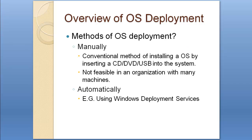So what are the methods of OS deployment? There are really two ways: manually and automatically. Manually is the conventional way where we used to take a DVD or CD, burn the operating system on the media, and then deploy it by inserting the CD or DVD into a bare metal system that doesn't have an operating system installed. This is obviously not feasible in an organization with many machines — enterprises with hundreds or even thousands of computers.